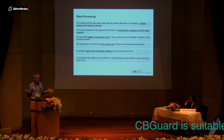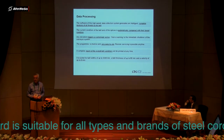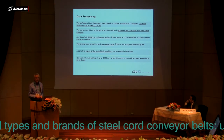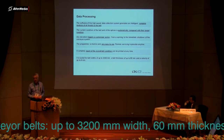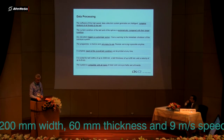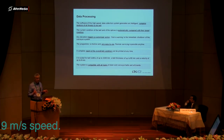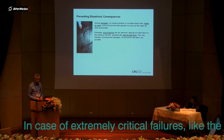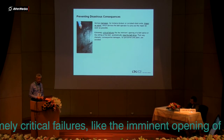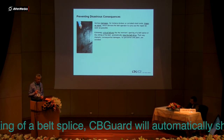The system is suitable for 99% of all conveyor belts, up to 3.2 meters belt width, 60 millimeters belt thickness, and up to 9 meters per second belt speed. It is compatible with all types of steel cord conveyor belts and all brands. If there is an extremely critical failure, like the imminent opening of a belt splice or slitting, the system will shut down the conveyor automatically.